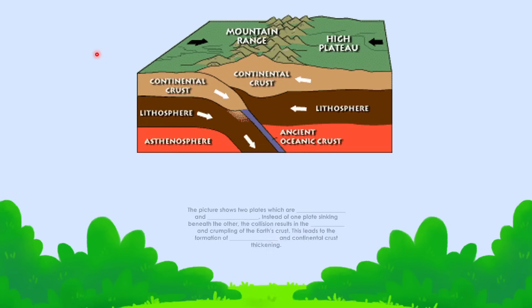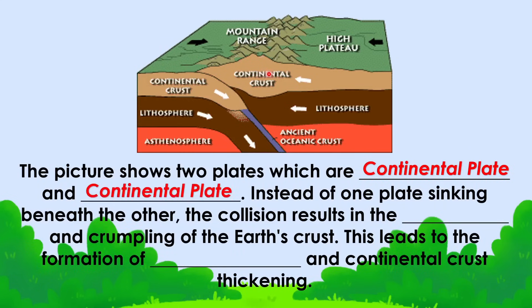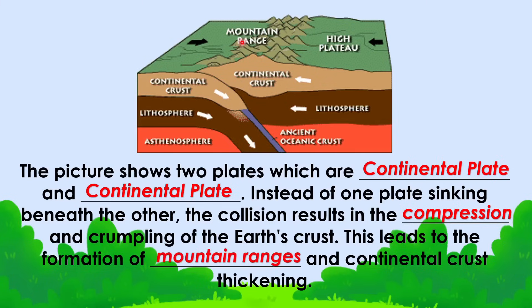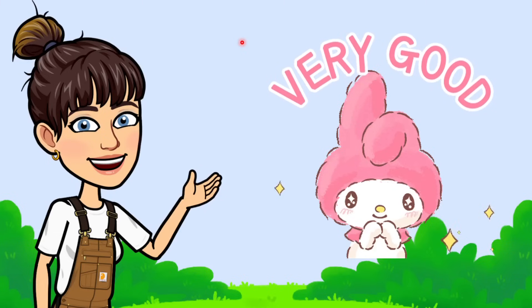Now let's proceed to the last picture. The picture shows two continental plates converging. Instead of one plate sinking beneath the other, the collision results in the compression and crumpling of the earth's crust. This leads to the formation of mountain ranges and continental crust thickening.